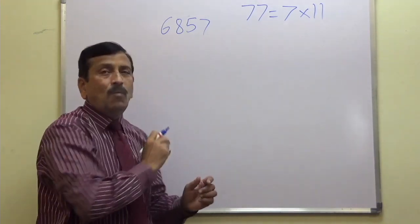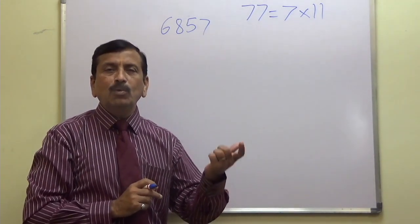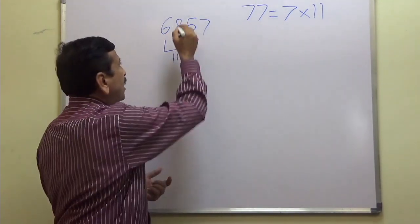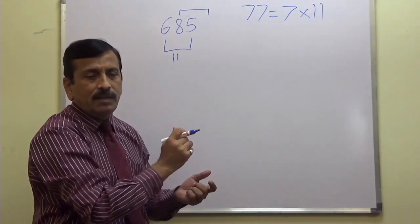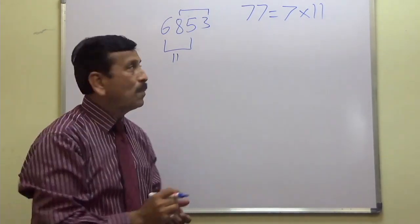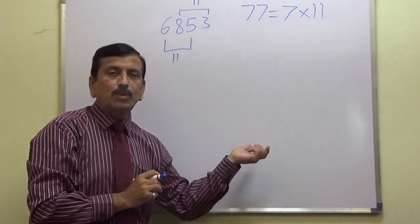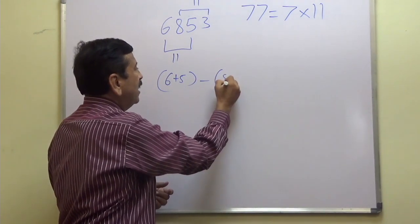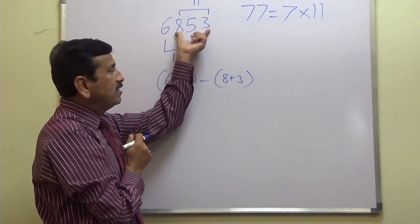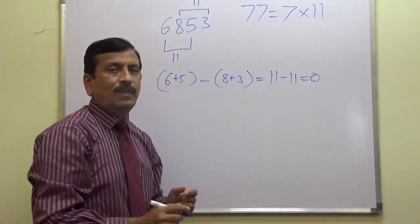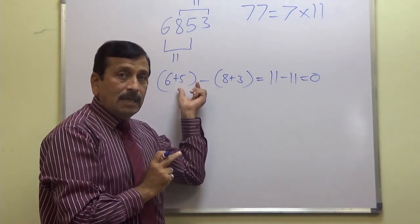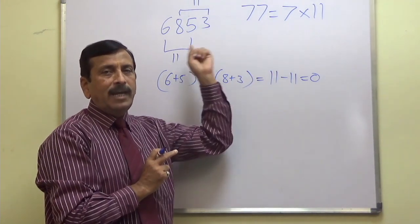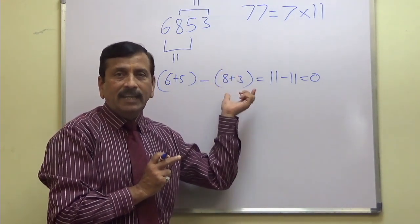Let us check by 11 first. What is the divisibility rule of 11? In the divisibility rule of 11, alternate digits will go for sum. For the number 6853: 6 plus 5 equals 11, and 8 plus 3 equals 11. So 11 minus 11 equals 0. When the difference of the two alternate digit sums is 0 or divisible by 11, then the entire number is divisible by 11.